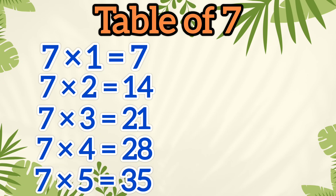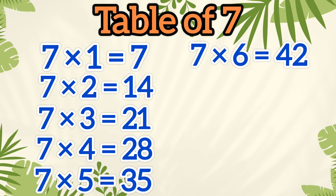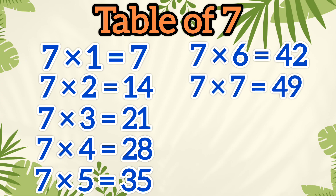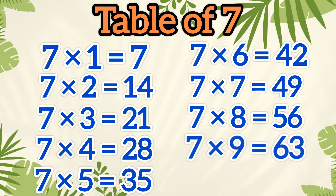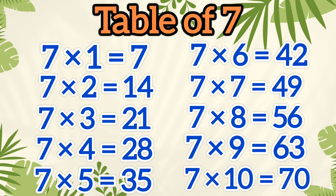Seven fives are thirty-five. Seven sixes are forty-two. Seven sevens are forty-nine. Seven eights are fifty-six. Seven nines are sixty-three. Seven tens are seventy.